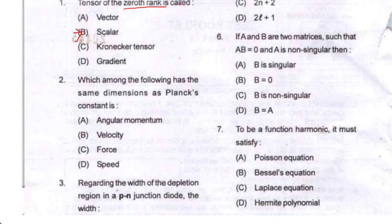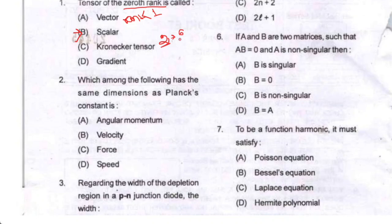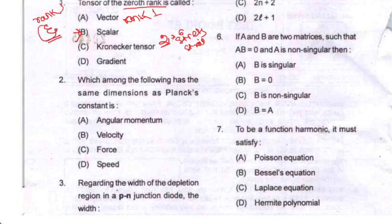This is a very important concept. Tensor of rank 1 is a vector. Tensor of rank 2 examples include electrical conductivity, thermal conductivity, stress, and strain. Tensor of rank 3 is also an important concept.